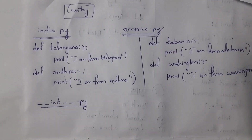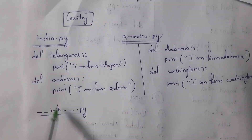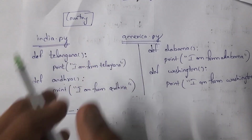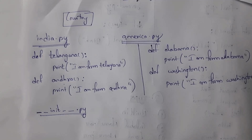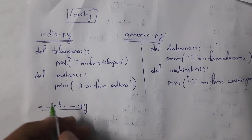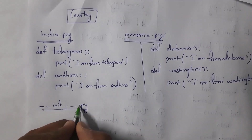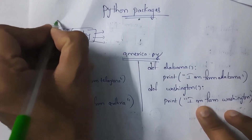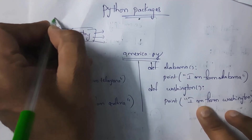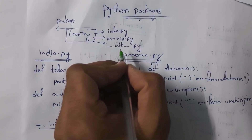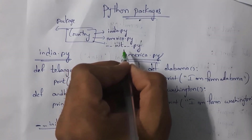Create __init__.py and don't write anything inside this module — just create it. Whenever you place these three modules inside the 'country' folder, we call this 'country' a package. This __init__.py helps the Python interpreter to recognize that this folder is a package.